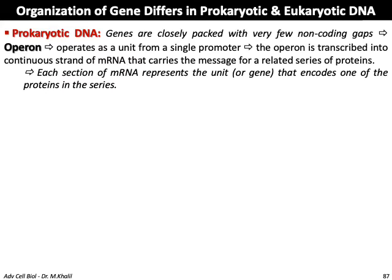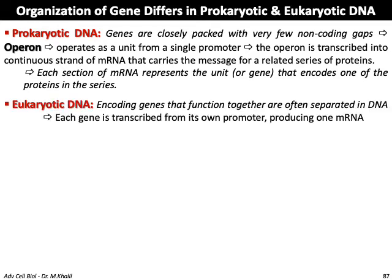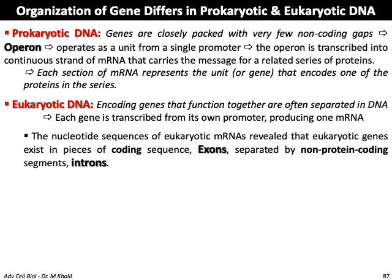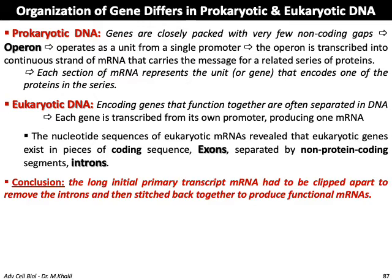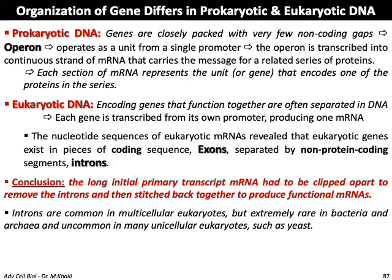In eukaryotic DNA, genes that encode proteins functioning together are often separated in DNA, and each gene is transcribed from its own promoter producing one messenger RNA. The nucleotide sequence of eukaryotic messenger RNA revealed that the eukaryotic gene exists in pieces of coding sequence called exons, separated by non-protein-coding sequence segments called introns. The long initial primary transcript in eukaryotes must be clipped apart to remove the introns and stitched back together to produce functional messenger RNA. Introns are common in multicellular eukaryotes but extremely rare in bacteria and archaea, and uncommon in many unicellular eukaryotes such as yeast.